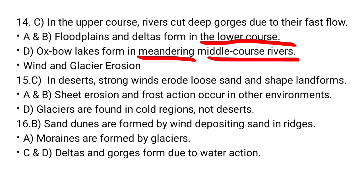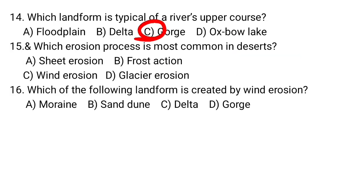Wind erosion is a common erosion process mostly known in desert areas — C is the correct answer for question fifteen. Sheet erosion occurs in other areas. Sand dunes are landforms created by wind erosion — B is the correct answer for question sixteen.